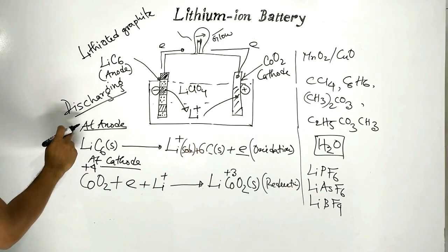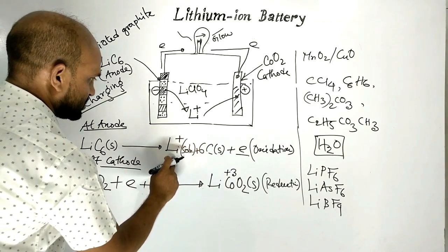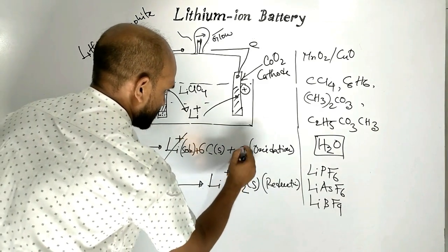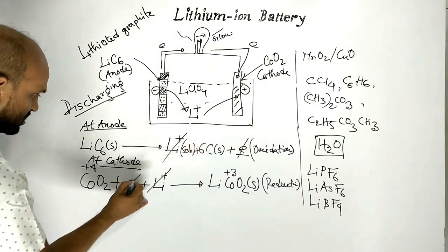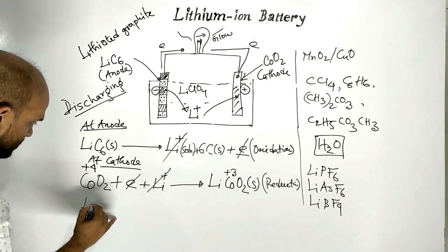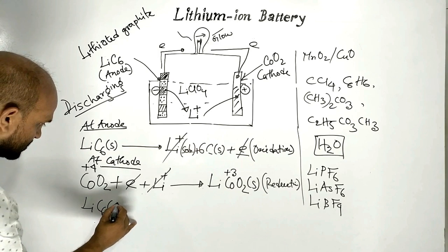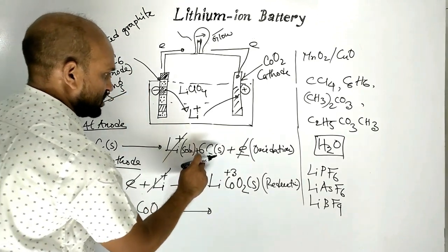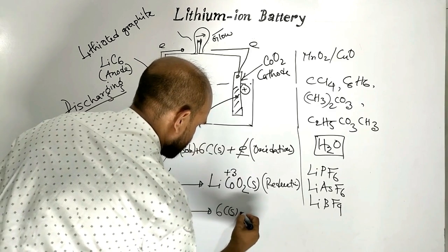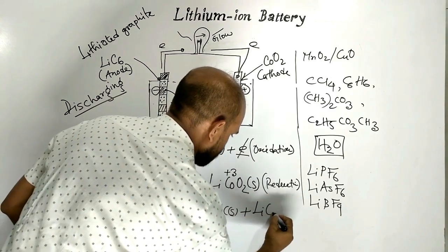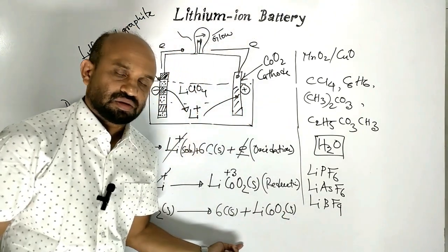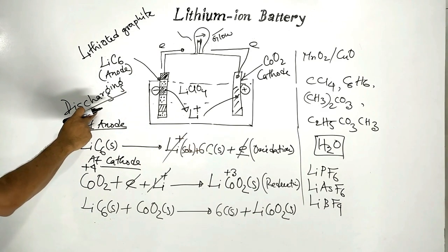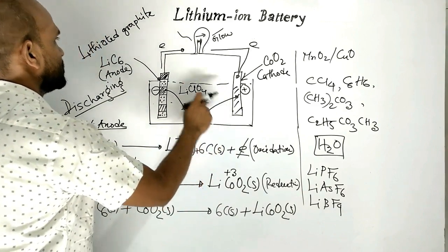Now let us see the overall reaction. Combining the anode and cathode half-reactions, the overall reaction is: lithiated graphite plus cobalt oxide yields six carbon atoms plus lithium cobalt oxide. This is the reaction that occurs during discharging, when the lithium-ion battery produces electricity.